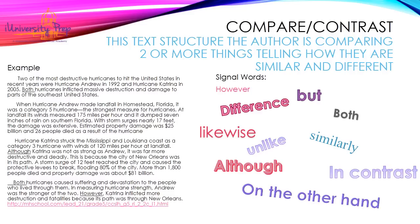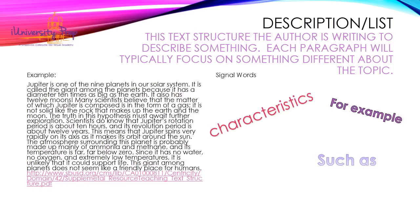For compare and contrast, again, you're looking for at least two things, and you're looking for paragraphs built around how these two things are the same and how they differ. The next one is description or list. This text structure is where the author is writing to describe something. Each paragraph will typically focus on something different about the topic. Words to look for are: for example, such as, characteristics. This is harder to identify with keywords, but what you're looking for is that it keeps generally to one main topic — one main idea, one object, one place, one event, one item — and they're explaining that topic in great detail.